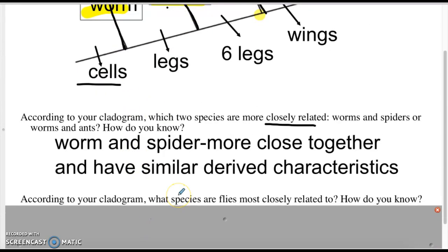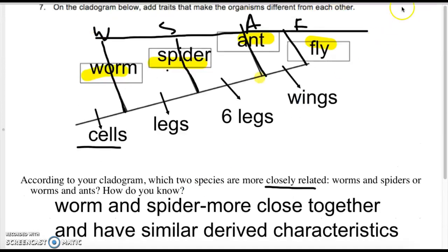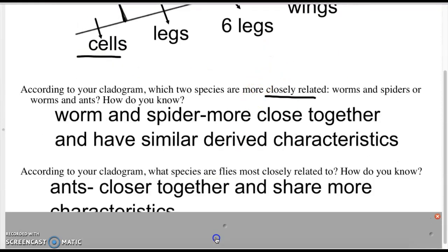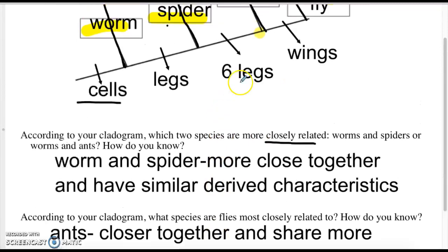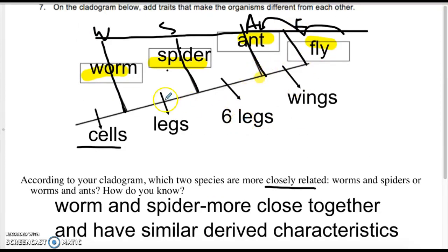According to your cladogram, what species are flies more closely related to? You look up here at flies, and you want to see the organism that's closest to it, and so that would have been the ant. These two are more closely related than spider worm, partly because they're close to each other, and because they share most of the derived characteristics in common with each other.